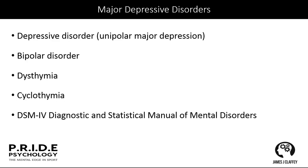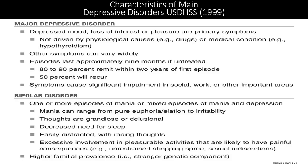Major depressive disorders include: unipolar major depression, bipolar, dysthymia, and cyclothymia. Major depressive disorder features depressed mood, loss of interest or pleasure as primary symptoms — not driven by physiological causes like drugs or medical conditions. Episodes last approximately nine months if untreated. 80 to 90% will remit within two years of the first episode, but 50% will reoccur. Bipolar depression — despite media portrayals — involves one or more episodes of mania, or mixed episodes of mania and depression. Mania can range from pure euphoria to irritability, with grandiose or delusional thoughts, decreased need for sleep, racing thoughts, and excessive involvement in pleasurable activities with potentially painful consequences.